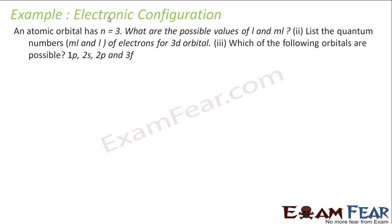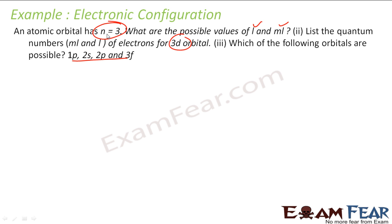For an atomic orbital where n is equal to 3, we need to find the possible values of L and ML. If n is equal to 3, the values of L can be 0, 1, and 2.